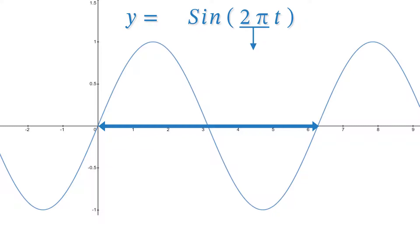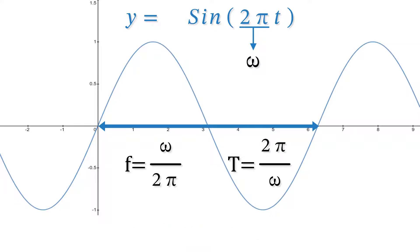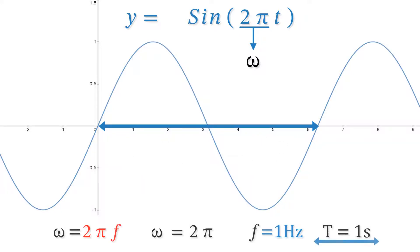Whatever's in front of the t in the bracket is omega. So here omega equals 2 pi, but omega always equals 2 pi f, so f must be one cycle per second or one hertz. Use these two equations to work out frequency and period if you know what omega is — you'll usually be given it. This has a frequency of one hertz, or one cycle per second, and a period of one second. Just remember that omega is always in front of the t in the bracket.